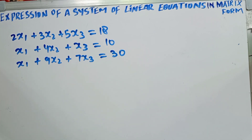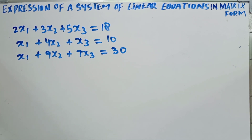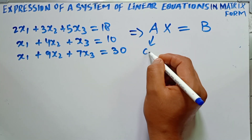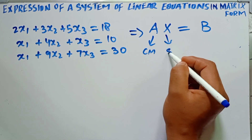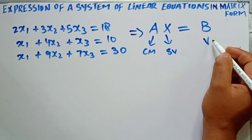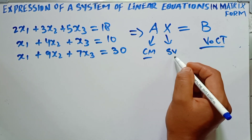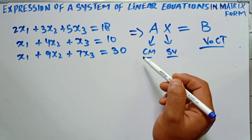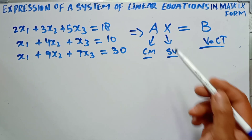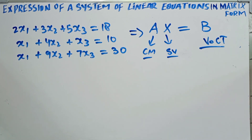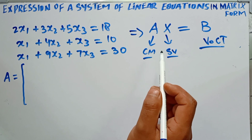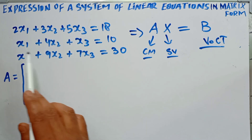If these are a system of linear equations, we can convert them into matrix form as we have seen in the earlier example — we write this in the form A X is equal to B, where A is the coefficient matrix, X is the solution vector, and B is the vector of constant terms.